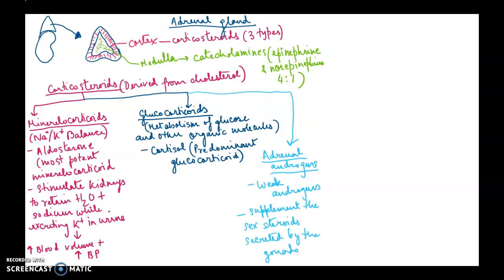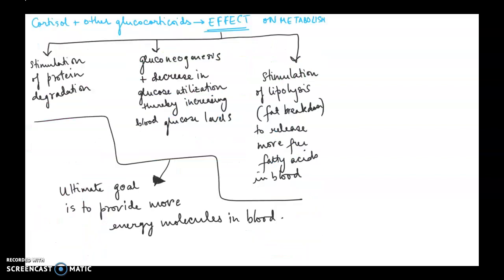Moving on to some of the effects — cortisol and other glucocorticoids have significant effects on metabolism. These effects include stimulation of protein degradation, gluconeogenesis, and a decrease in glucose utilization, thereby increasing blood glucose levels. This also stimulates lipolysis, meaning fat breakdown, to release more free fatty acids into the blood.